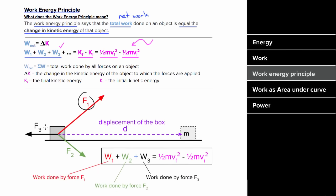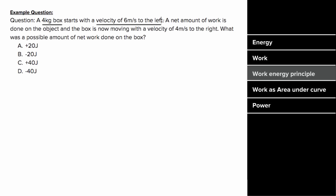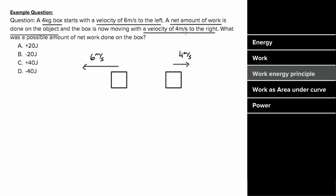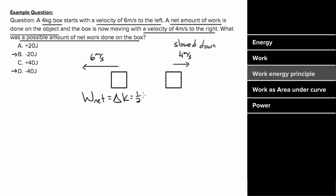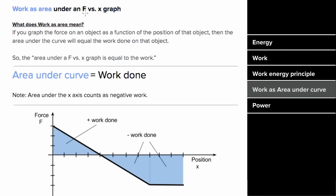In other words, if there are multiple forces on an object and you can find the work done by each of those forces, you can determine how much kinetic energy that object gained or lost. For example: a 4 kg box started with a velocity of 6 m/s to the left. Some net amount of work is done on that box, and it's now moving with a velocity of 4 m/s to the right. What was the net work done on the box? Since this object slowed down, energy was taken from it, so the net work had to be negative. Using the work-energy principle: net work equals the change in kinetic energy, so one-half times 4 kg times (4 m/s)² minus one-half times 4 kg times (6 m/s)², which gives negative 40 joules of net work.